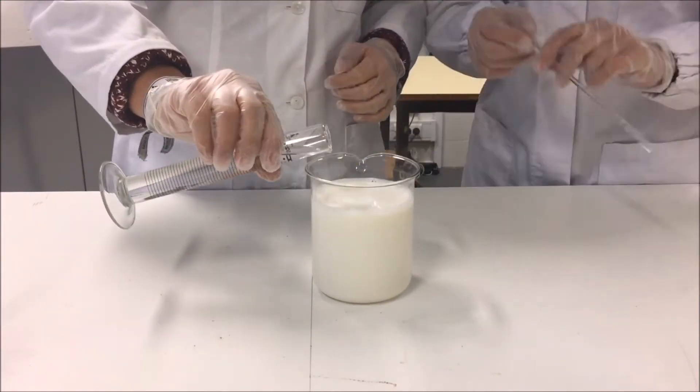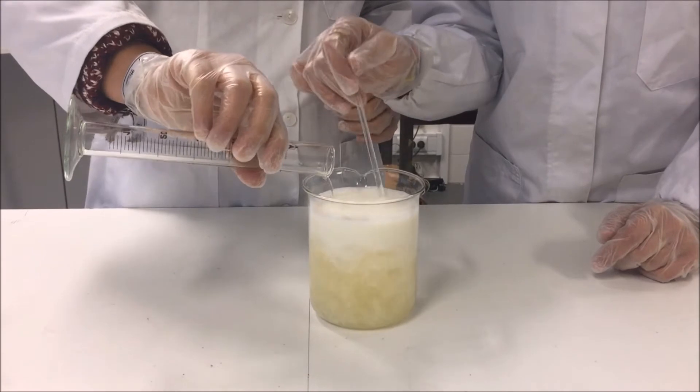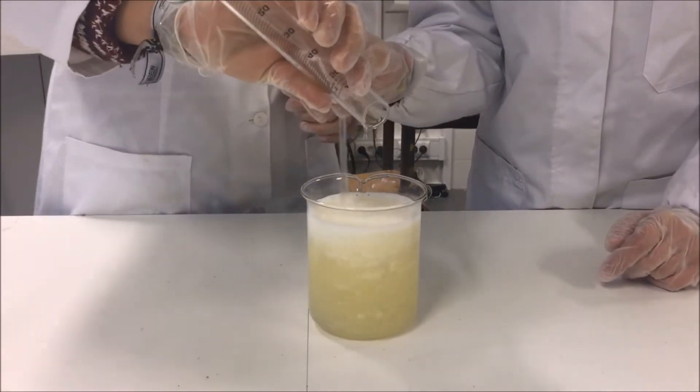Add the acetic acid to the milk and the formation of gallolith is instantaneous as it can be observed by the formation of lumps in the solution.